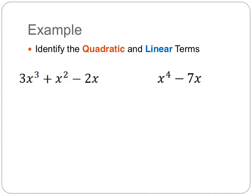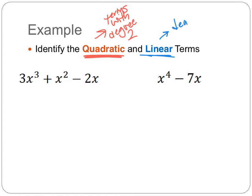The next thing we're going to look at is quadratic terms and linear terms. Quadratic terms are a name for terms that have a degree of 2. Typically this is reserved for a single variable, but the idea is that any term with a degree of 2 is called a quadratic term. A term with a degree of 1 is called a linear term. Looking at two examples below, we can identify the quadratic term and the linear term.